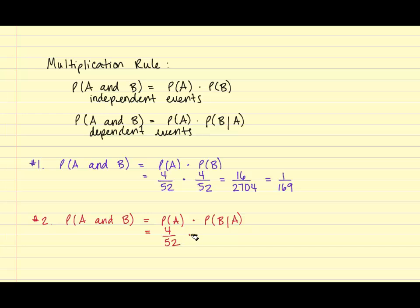We then keep the card and select the queen. There are four queens out of 51 cards because we kept the first card. So that simplifies to 16 over 2652, which reduces down to four over 663.